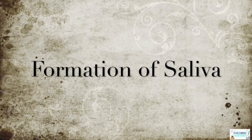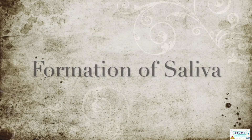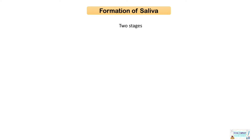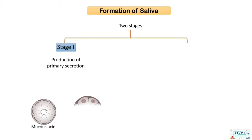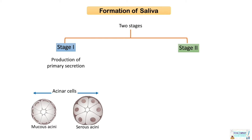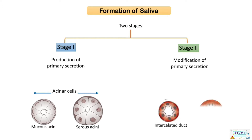Salivary secretion may be defined as a unidirectional movement of fluid, electrolytes, and macromolecules into saliva in response to appropriate stimulation. Saliva is formed in two stages: the first stage is the production of the primary secretion by the acinar cells, while the second stage is carried out by the ducts — the intercalated and the striated ducts — where the primary secretion is modified. The main duct involved in this is the striated duct.